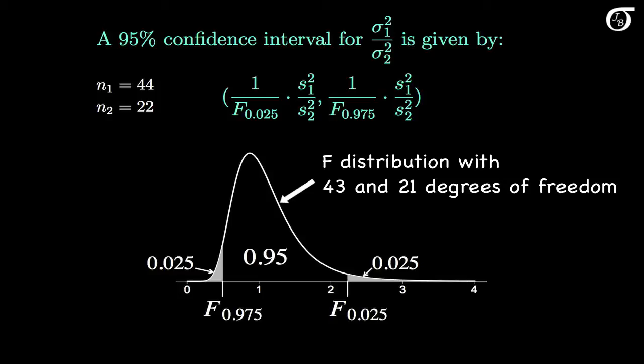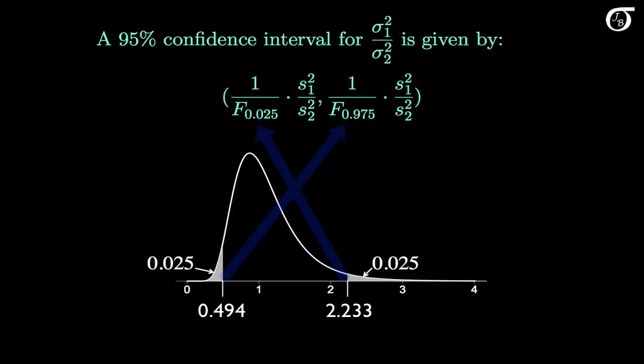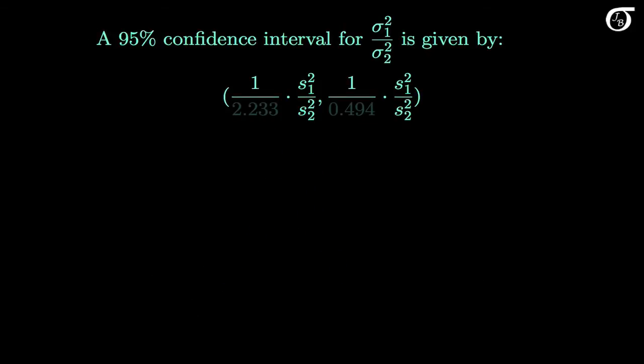And here's the f distribution with those degrees of freedom. f sub 0.025 is the f value with an area to the right of 0.025, and f sub 0.975 is the f value with an area to the left of 0.025. If we go to software or an f table, we can find that those values are, to three decimal places, 0.494 and 2.233. If you're having trouble finding those values, I have videos outlining how to find them. So those values go into the formula, and we end up with this.